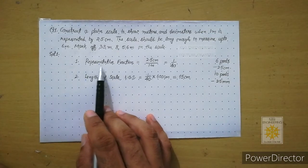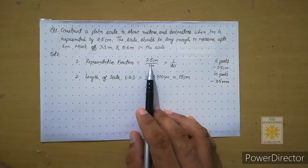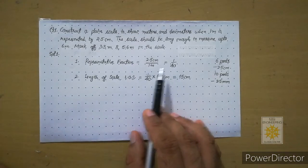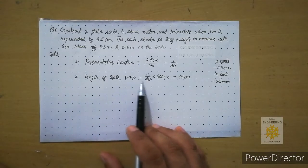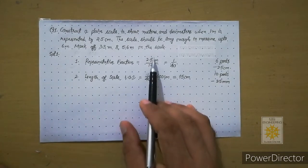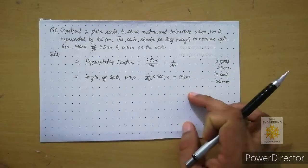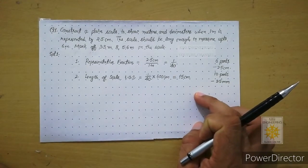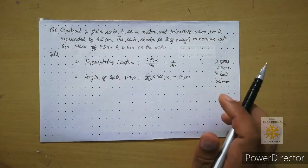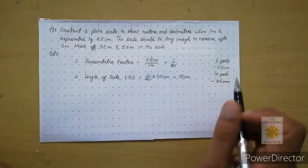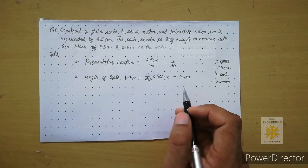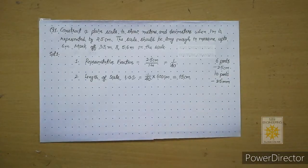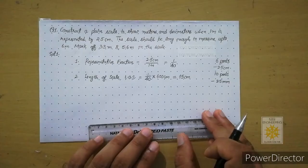With the help of pencil you will write the representative fraction and show the calculation. Then you will write serial number two and show the second calculation of length of scale. Below these two calculations you will draw the construction of the plane scale. For this particular problem we found that the length of scale is 15 centimeters.